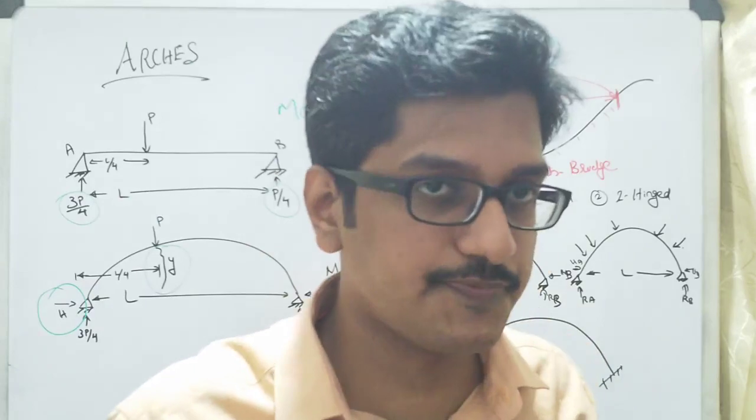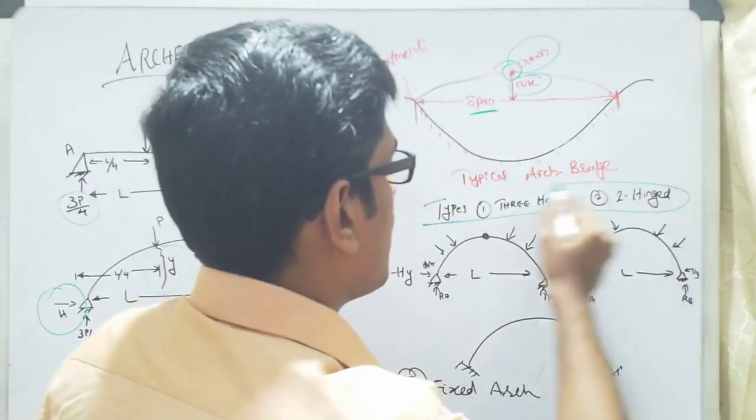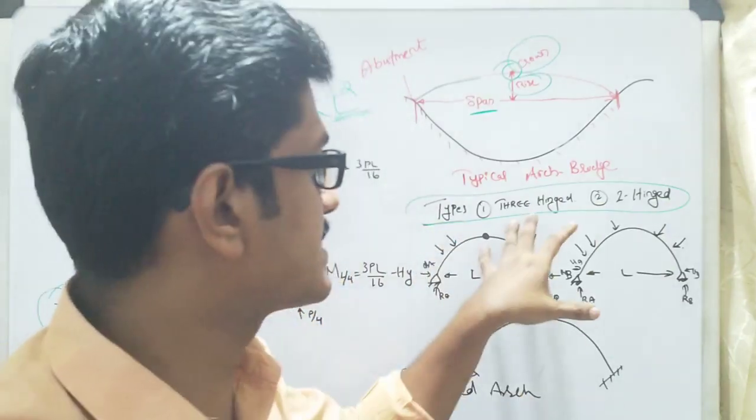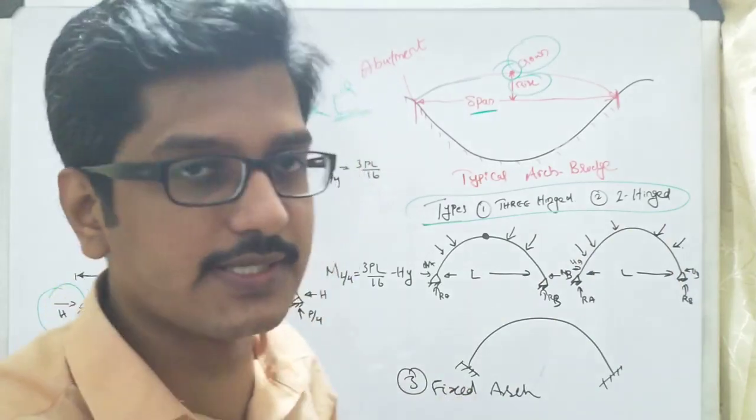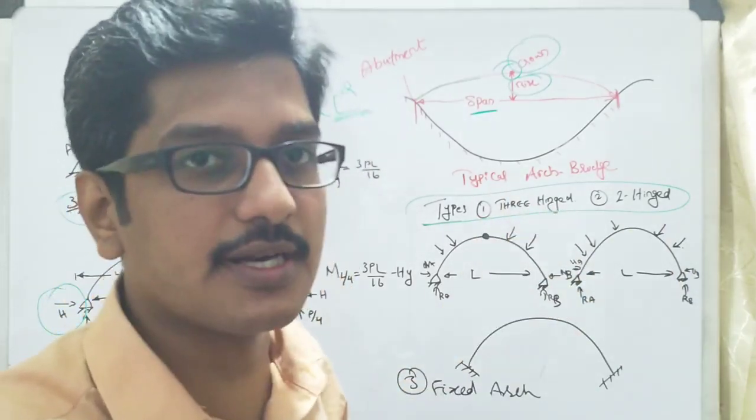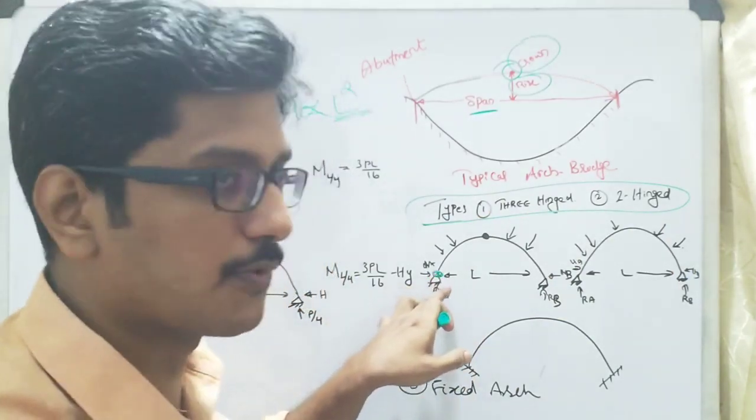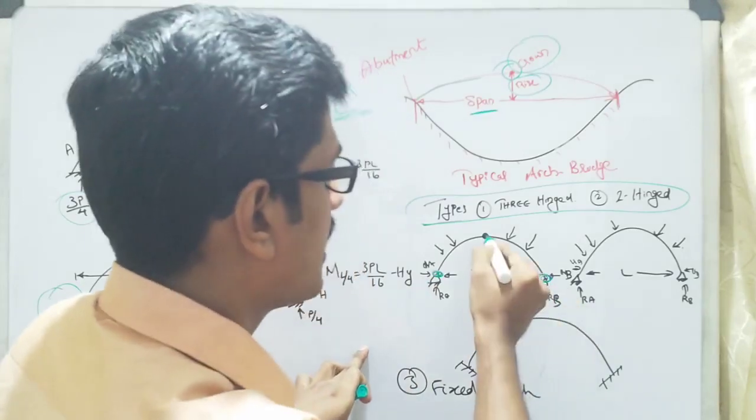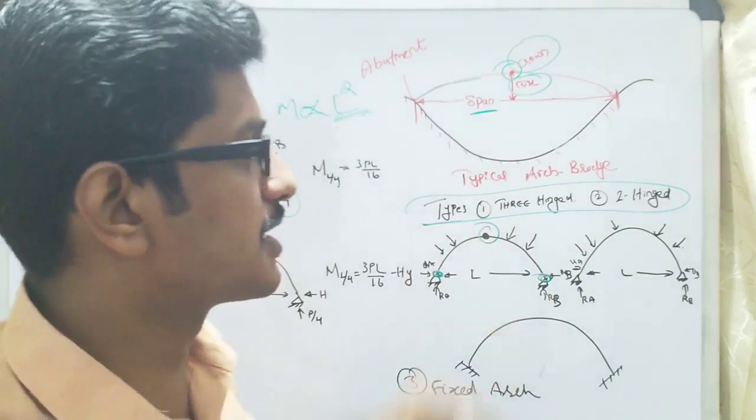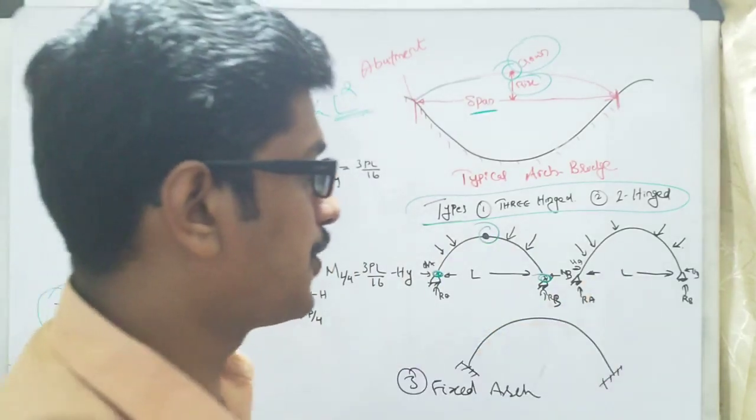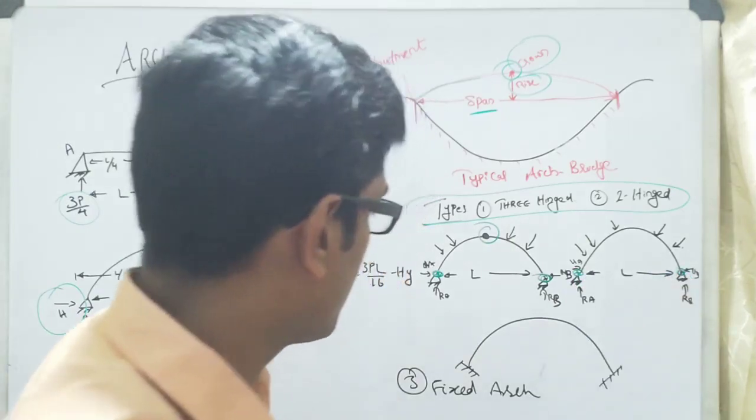Coming to the different types of arches: first one is three-hinged arch, second one is two-hinged arch, and last one is fixed arch. In the case of three-hinged arch, as the name indicates, there will be three hinges, one at the support, one here also, and at the center there will be a hinge. In the case of two hinges, there will be two hinges only.